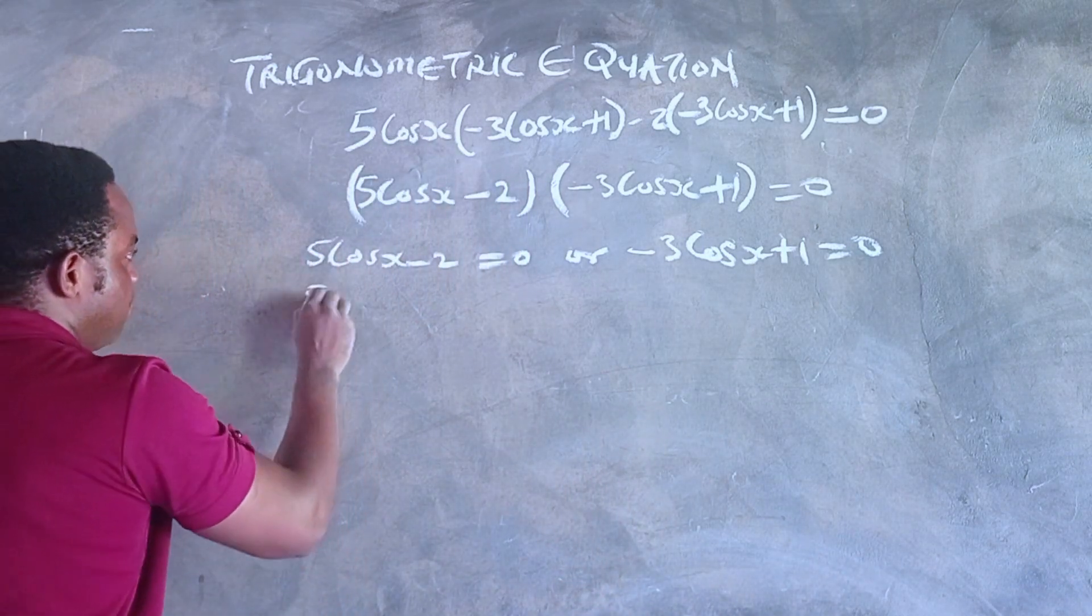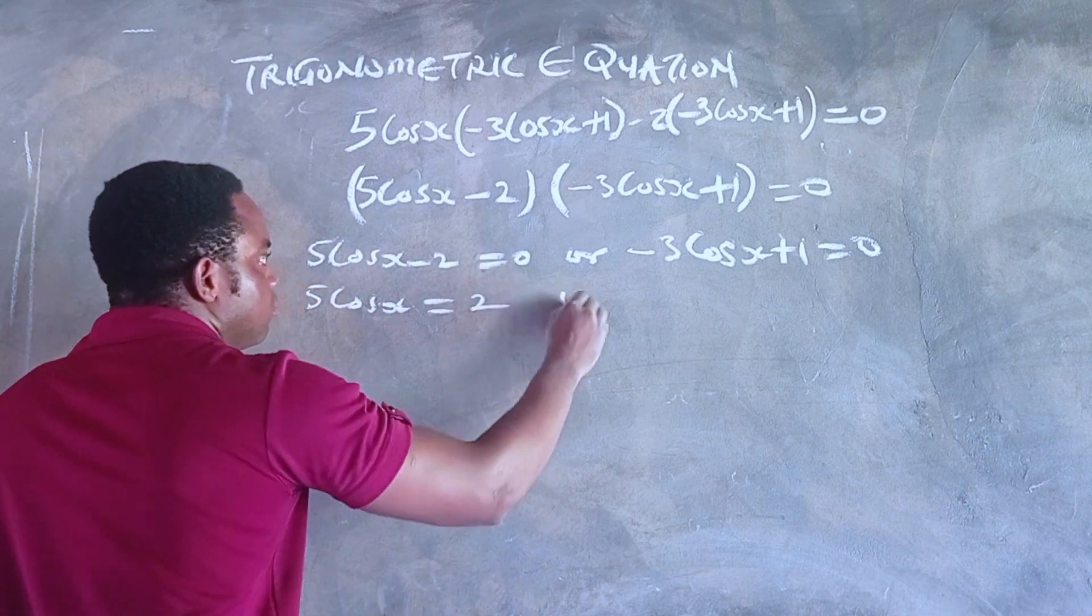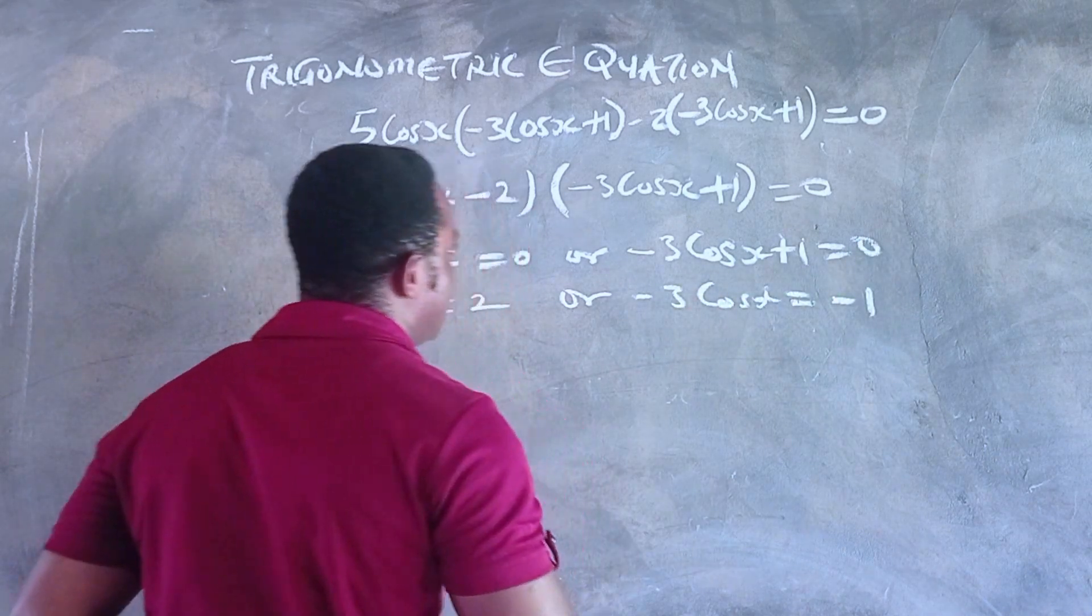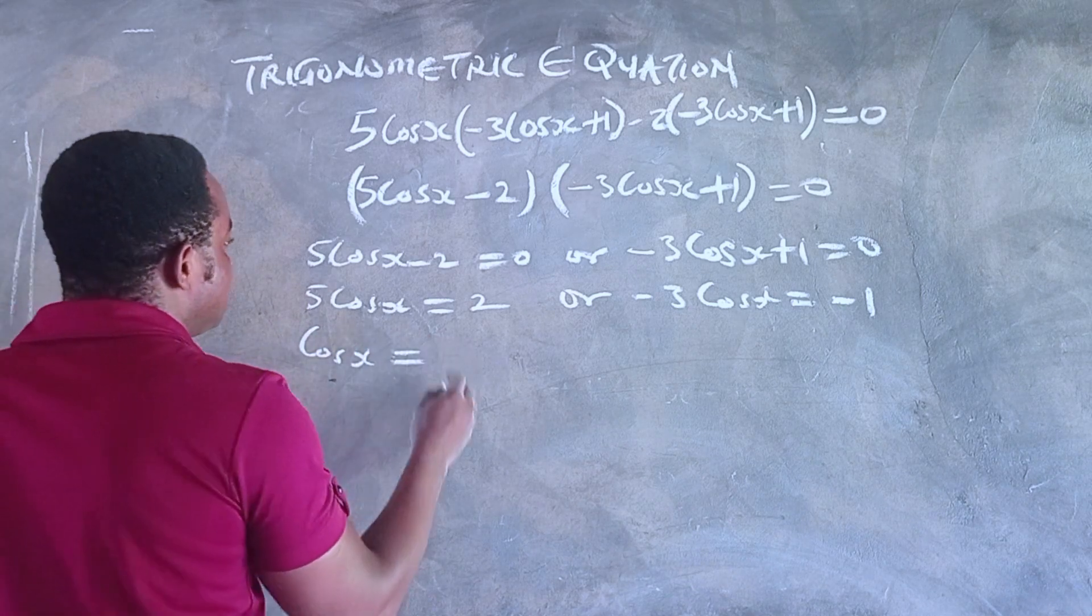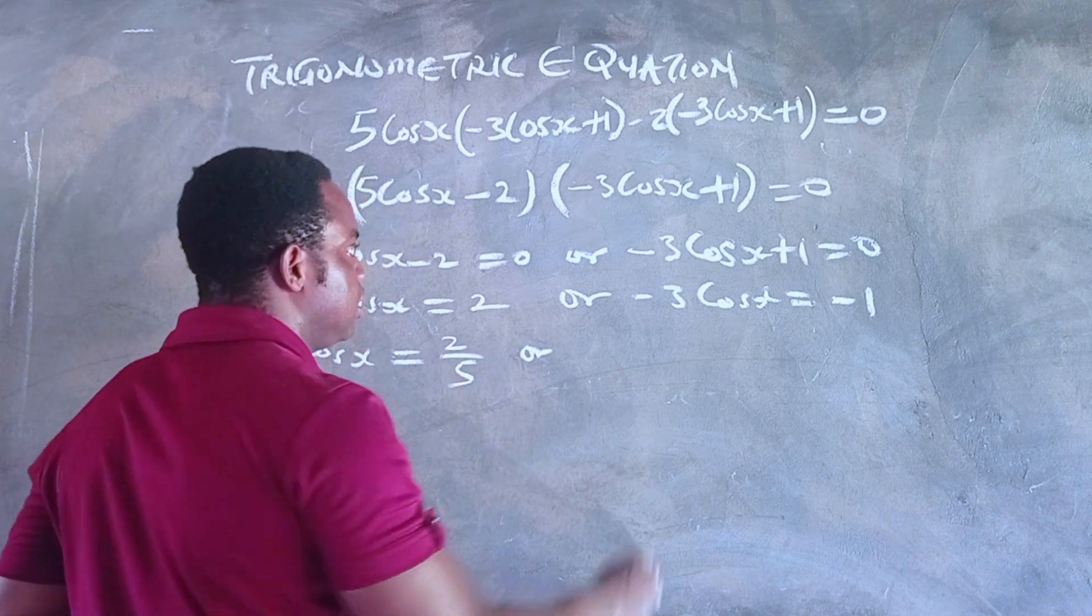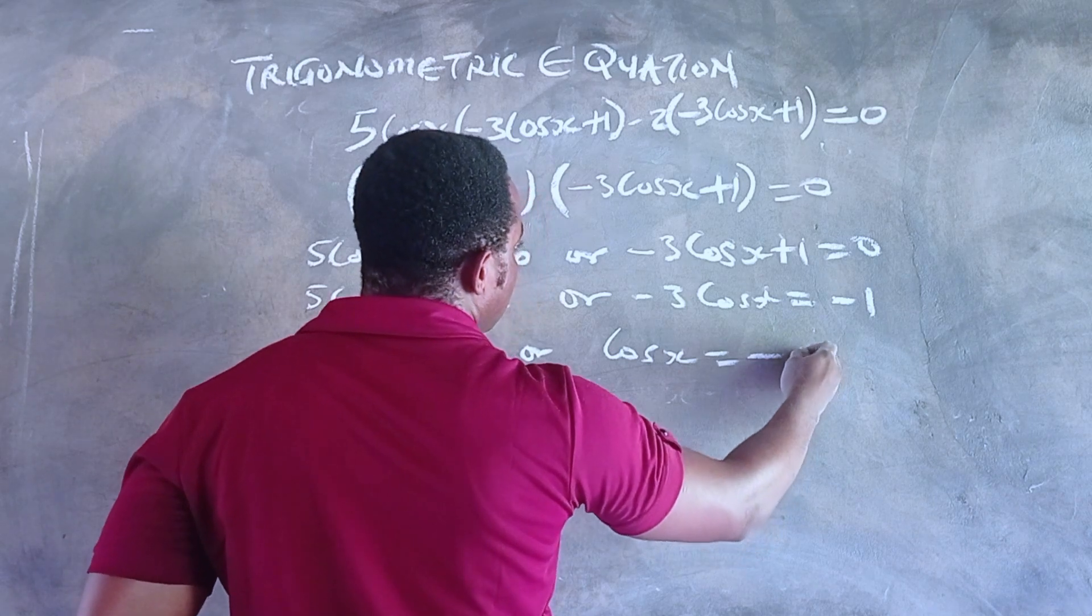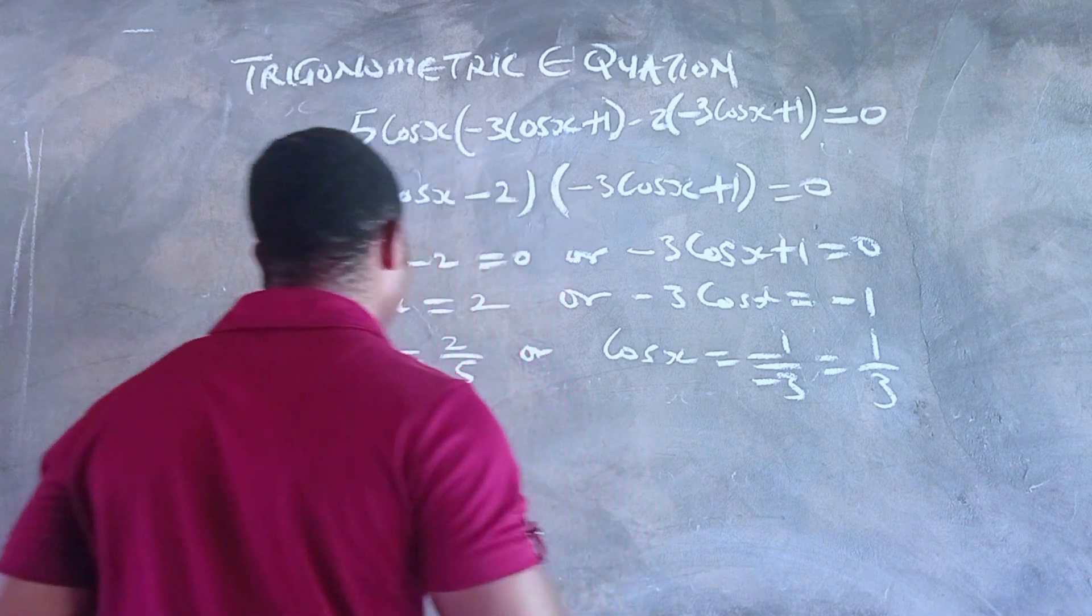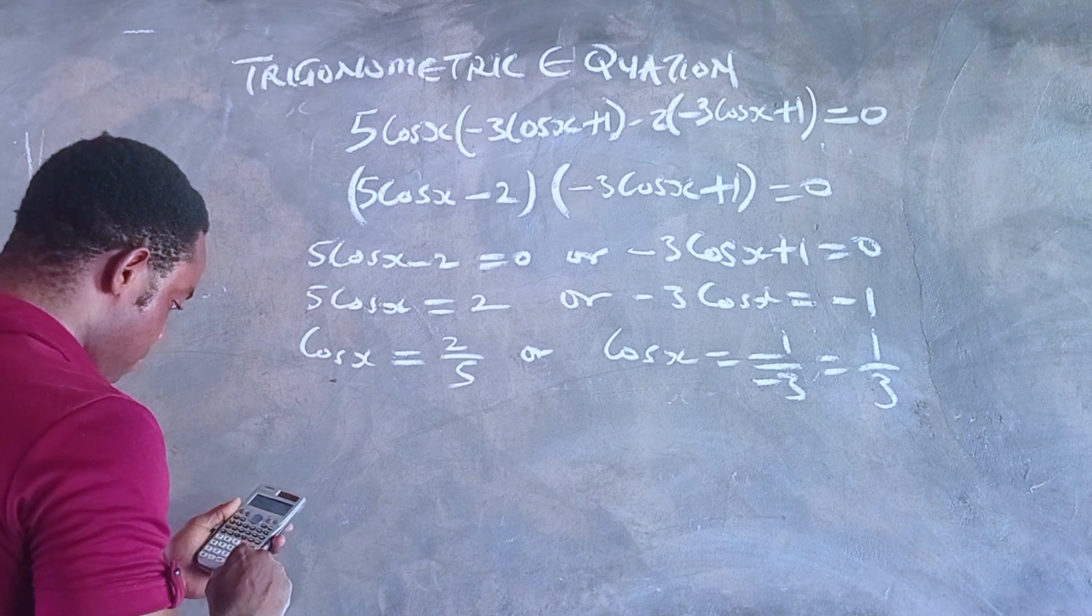So we have 5cosx = 2 or -3cosx = -1. Dividing both sides by 5 gives cosx = 2/5. For the other equation, -1/-3 gives cosx = 1/3.